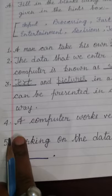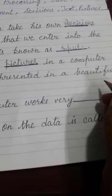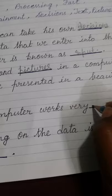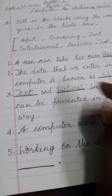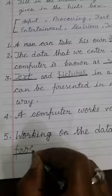Question number 4: A computer works very dash. Computer working on data is called dash. The data is called processing. Yes, processing. P-R-O-C-E-S-S-I-N-G.